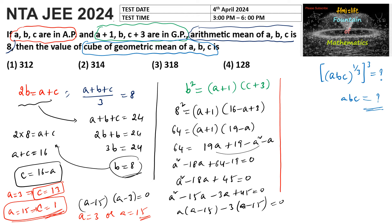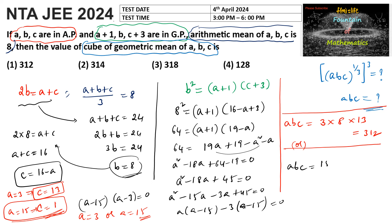Now let's find abc for both possibilities. When a equals 3, b equals 8, c equals 13: 3 into 8 into 13 gives 312. In the second case, when a equals 15, b equals 8, c equals 1: 15 into 8 into 1 gives 120. The cube of the geometric mean of abc is (abc) to the power 1 by 3, and cubing gives 312 or 120. Checking the options, 312 is the answer.